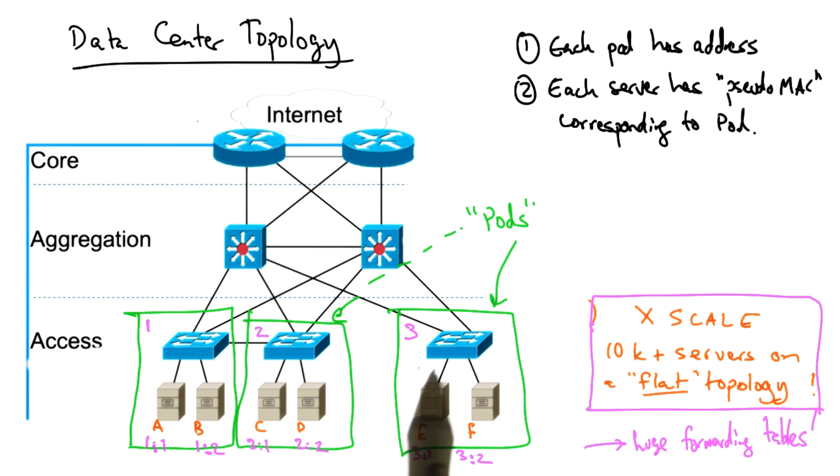Once a frame enters a pod, the switch then, of course, has entries for all of the servers inside that pod. But they don't need to maintain entries for the MAC addresses for servers outside of each pod.